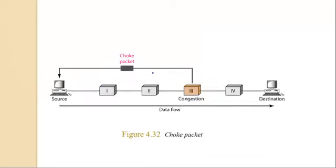The next closed loop method is the choke packet. A choke packet is a packet sent by a congested node directly to the source to inform it about the congestion. The difference from back pressure is that in back pressure the warning travels node to node, while with a choke packet the warning reaches the source directly. Intermediate nodes are not notified — only the source node is informed.